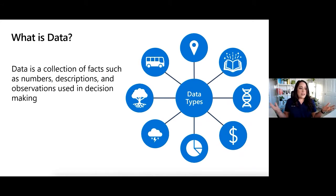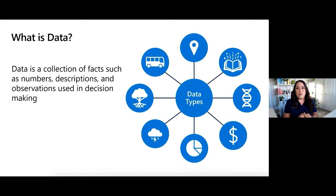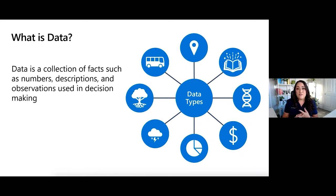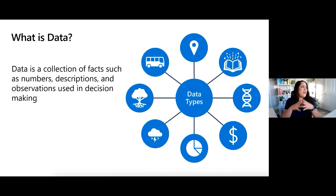Data can come from anywhere in the world. You likely have some type of smartphone sitting next to you right now. That smartphone is collecting data — maybe it's your GPS location, your search history, or coupons that you're saving at your favorite store. That can all be data. You can collect data from the weather, from finances, from books. The possibilities are endless with data, but it's what you do with the data where the power really comes in.